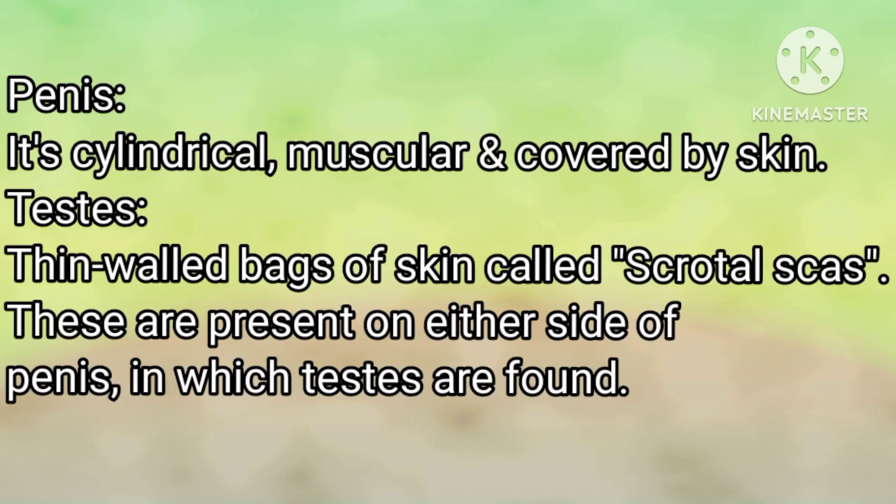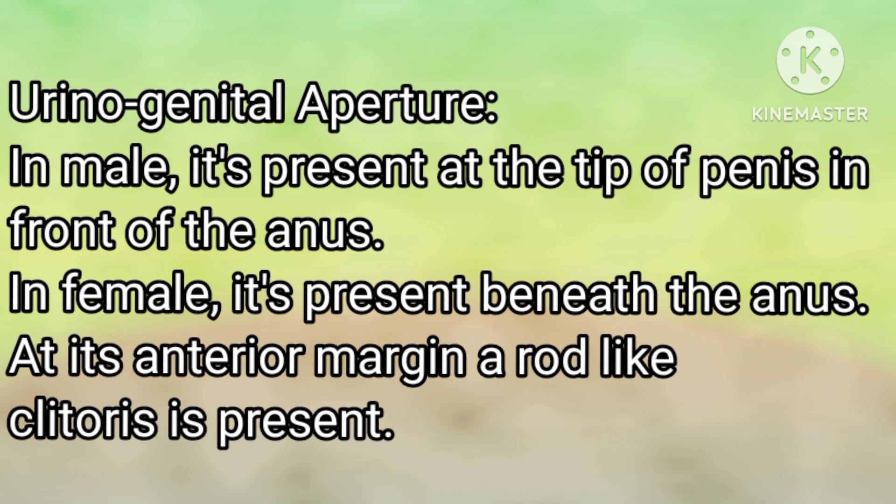Penis: It is cylindrical, muscular and covered by skin. Testis: Thin-walled bags of skin called scrotal sacs are present on either side of the penis, in which the testes are found. Urogenital aperture: In males, it is present at the tip of the penis in front of the anus. In females, it is present beneath the anus.